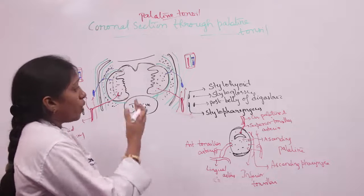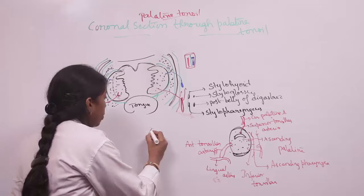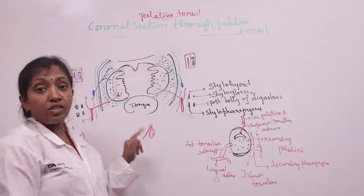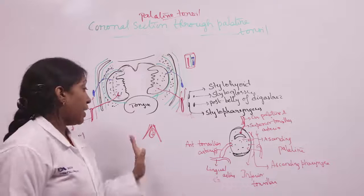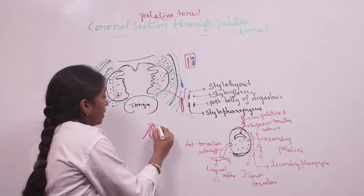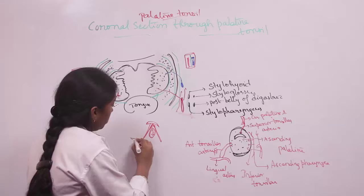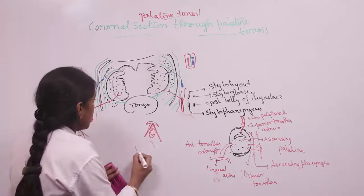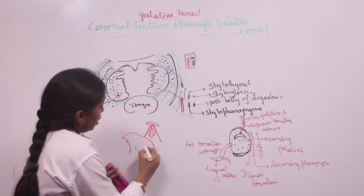Coming to the boundaries of the palatine tonsil: it is bounded in front by the palatoglossal arch, behind by the palatopharyngeal arch, above by the soft palate where the two arches meet, and below by the posterior one-third of the dorsum of the tongue.